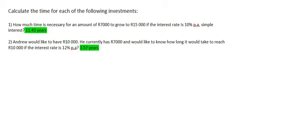In these questions, we're going to work out how much time is needed for an investment to grow. For number one, it says how much time is necessary for an amount of 7,000 Rand to grow to 15,000 Rand if the interest rate is 10% per annum. Per annum means per year, simple interest.